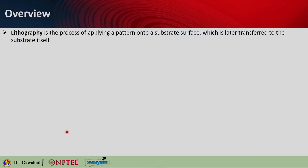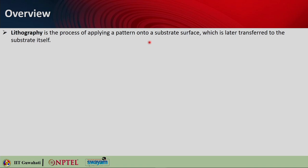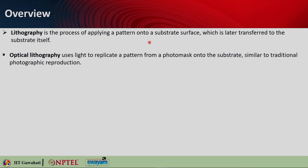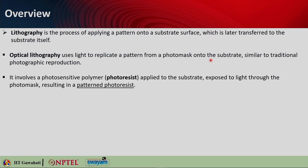In the previous lecture, we covered different methods of depositing thin films. Now we will look into the methods related to lithography, where we are able to make patterns on those films or in the substrate itself. Lithography is the process of applying a pattern onto a substrate surface, which is later transferred to the substrate. Optical lithography or photolithography uses light to replicate a pattern made in a photo mask, which is then transferred onto the substrate — very similar to traditional photographic reproduction.